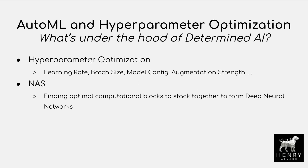Deep neural network performance is really sensitive to these hyperparameters, and it's important to search through them to find the best performance, report proper baselines, and compare models properly. Neural architecture search is another really exciting idea — a bit more ambitious than hyperparameter optimization — where you're trying to find the optimal computation blocks to stack together to form deep neural networks.